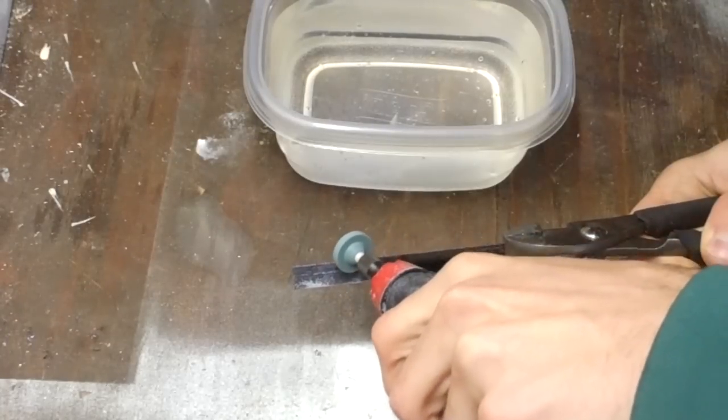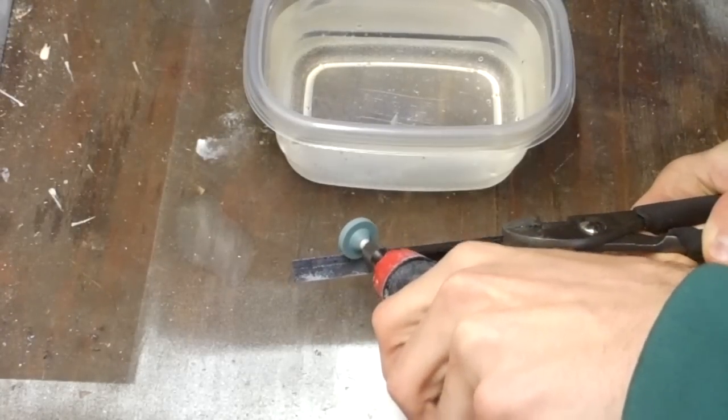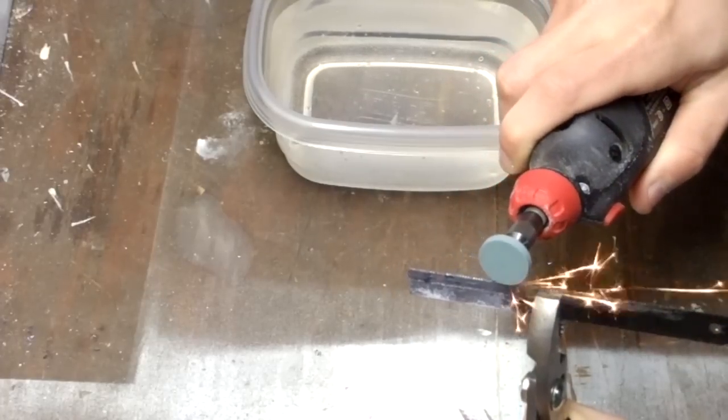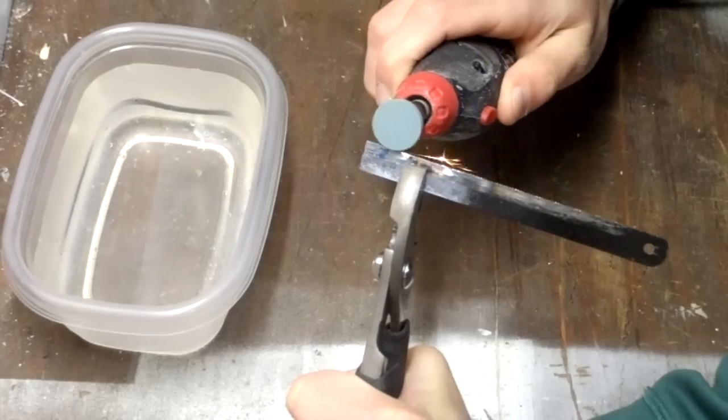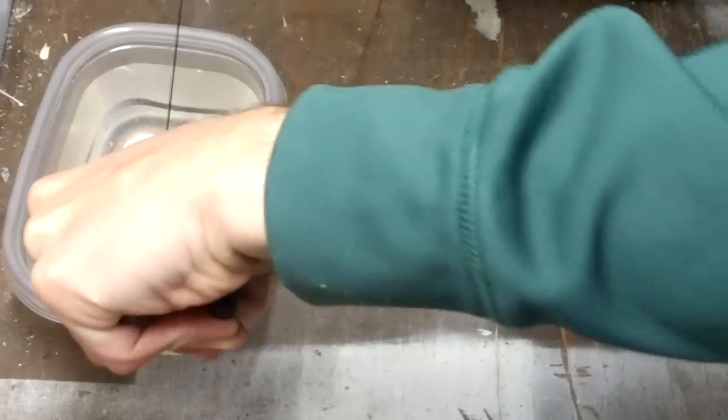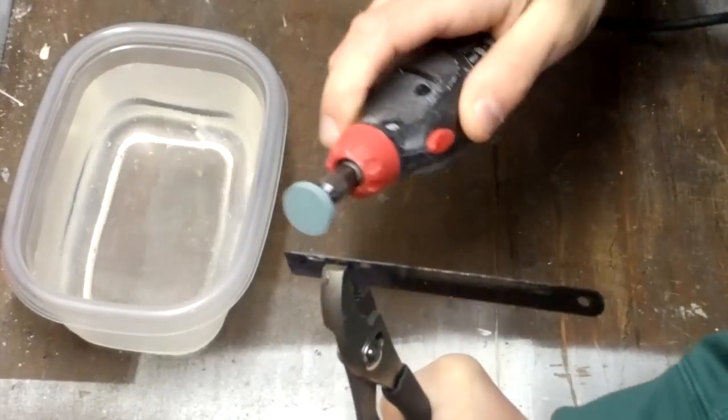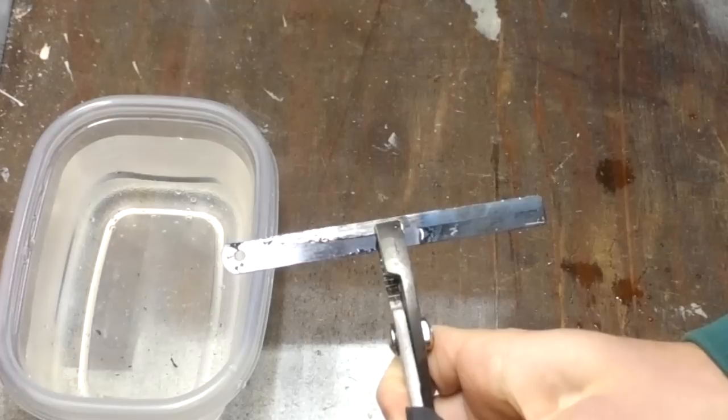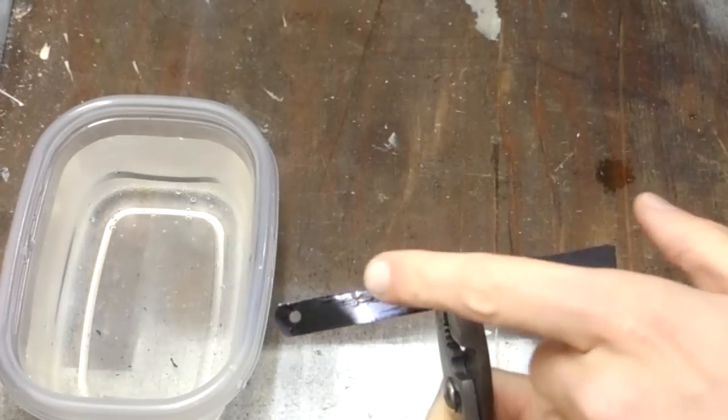So now we just start grinding the teeth away. Make sure you quench it in the water occasionally so it doesn't get too hot. Once all the teeth are gone it should look something like this.